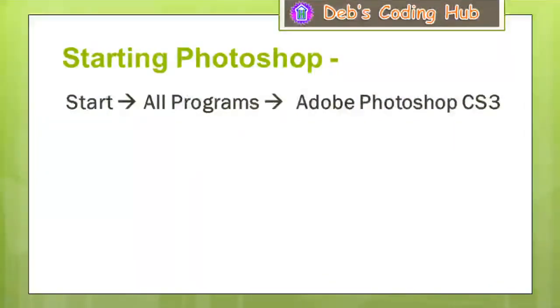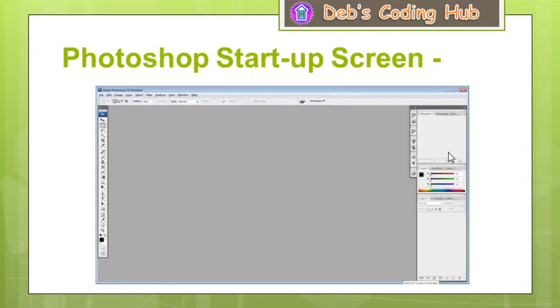Now let us see how to start Photoshop. To start Photoshop, you have to click on the Start button, go to All Programs or Programs, and then click on Adobe Photoshop CS3. If you do so, you will be able to see the application loading. After Adobe Photoshop CS3 is loaded onto the computer screen, it is shown like this.